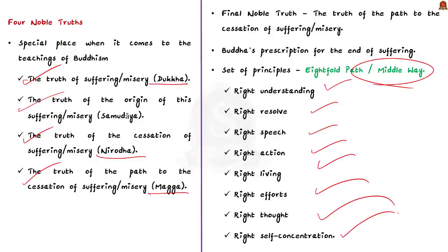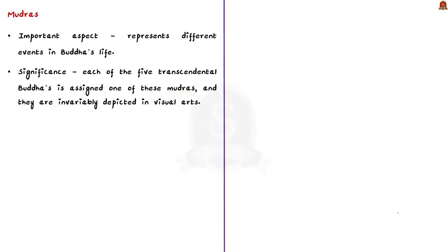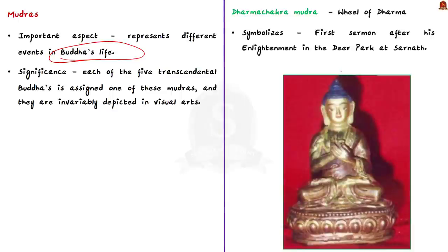Mudras form an important aspect of Buddhism, representing different events in Buddha's life. The first mudra is Dharma Chakra Mudra — meaning wheel of dharma — which represents the event when Buddha gave his first sermon to his companions after attaining enlightenment at Sarnath. The second is Bhumisparsha Mudra — touching the earth — which symbolizes Buddha's enlightenment under the Bodhi tree.